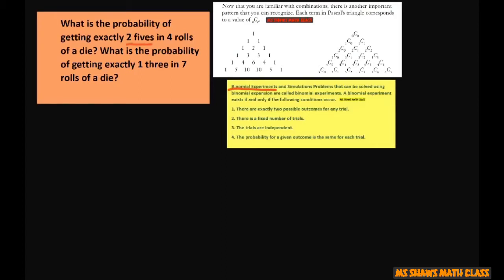The probability of getting a five is one sixth, so the probability of not getting a five is five sixths.